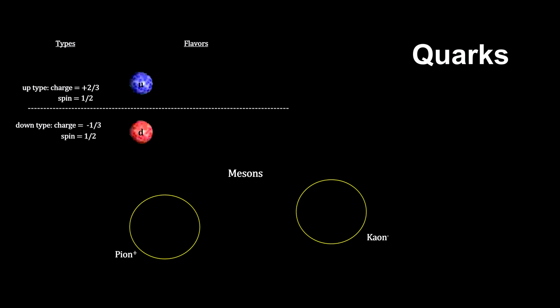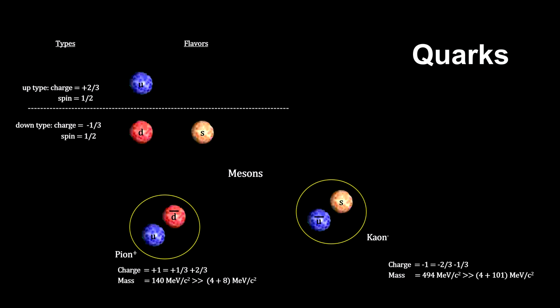The two mesons we've seen are the pion and the kaon. The positively charged pion has an up-quark and an anti-down-quark. The negatively charged kaon contains an anti-up-quark and a third kind of quark called the strange quark. It was needed to explain the length of time it took the kaon to decay.